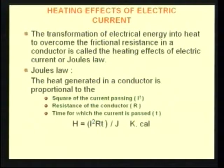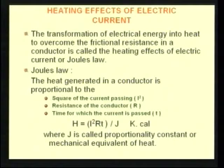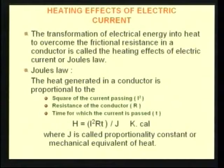The mathematical formula goes like this: heat generated in a conductor is equal to I squared R T divided by J, where J is a proportionality constant equal to the mechanical heat equivalent.